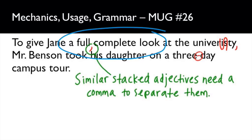For example, if I was wearing a fuzzy black sweater, "fuzzy" is an adjective for the sweater and "black" is an adjective for the sweater, but they're very different in meaning, so you don't separate them with a comma — you're just wearing a fuzzy black sweater, no comma. But for Jane, she's getting a full, complete look at the university, so you do need that comma there to separate those similar adjectives.